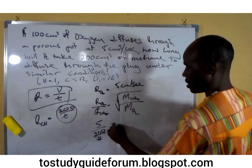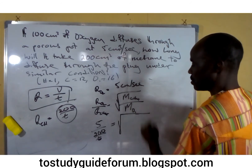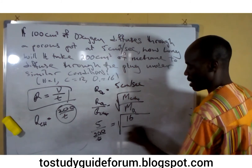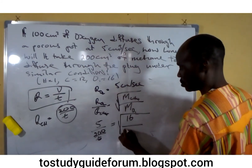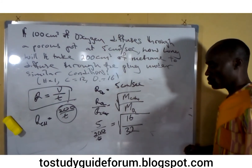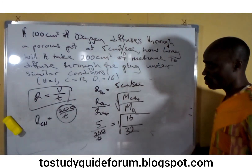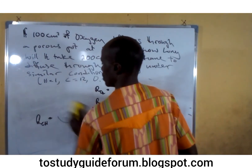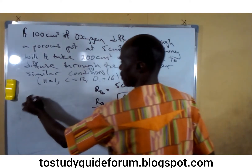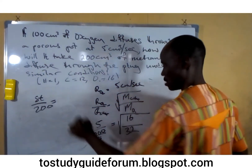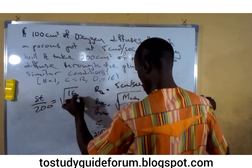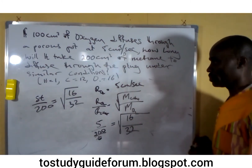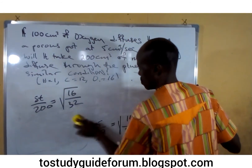The rate of diffusion of oxygen is 5, over the rate of diffusion of methane which is 200 ÷ t. The molecular mass of methane is 16, and that of oxygen is 32. Rearranging this gives us: 5t ÷ 200 = √(16 ÷ 32) = √(1 ÷ 2).